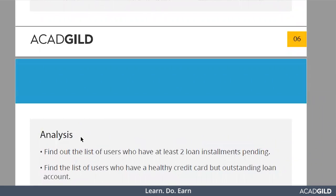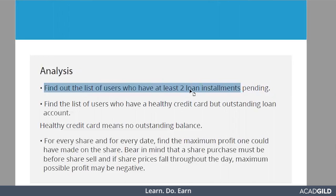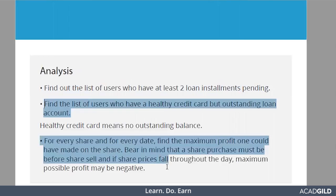Now comes the analysis part. Based on the data present in Hadoop, we have some analyses to perform. First, find out the list of users who have at least two loan installment payments pending. Based on this analysis, business strategies will be made — for example, if that same customer comes for a further loan, they may not be allowed the loan amount. So we need to find out who has at least two loan installments unpaid.